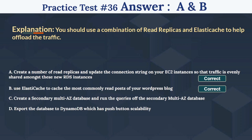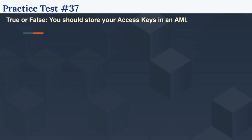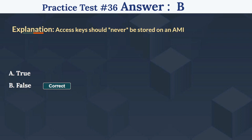So the 37th question is: True or False — You should store your access keys on an EC2 instance. The options are: Option A True, Option B False. The right answer is B, False. Access keys should never be stored on an EC2 instance.